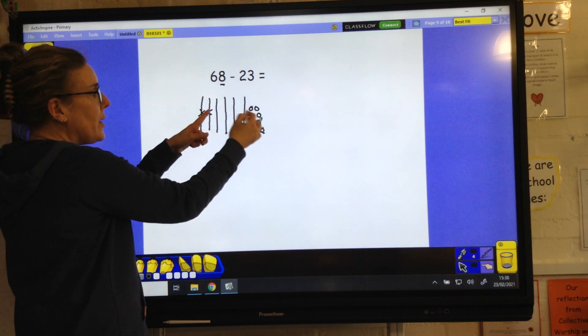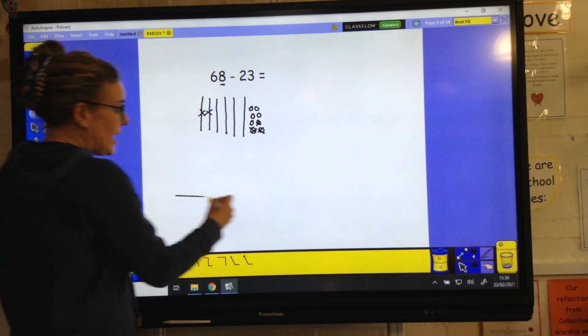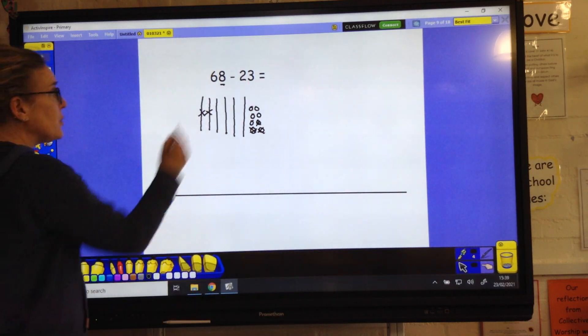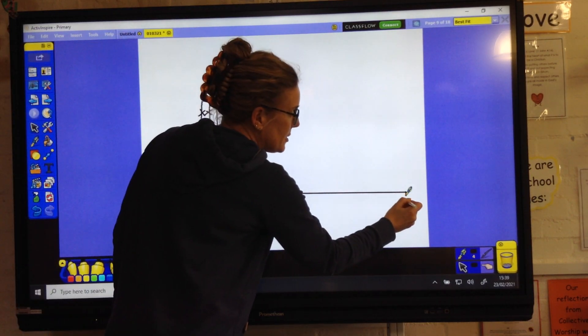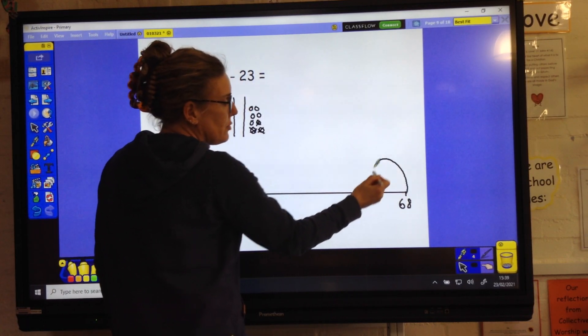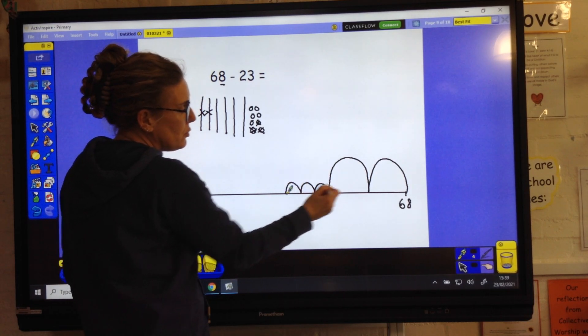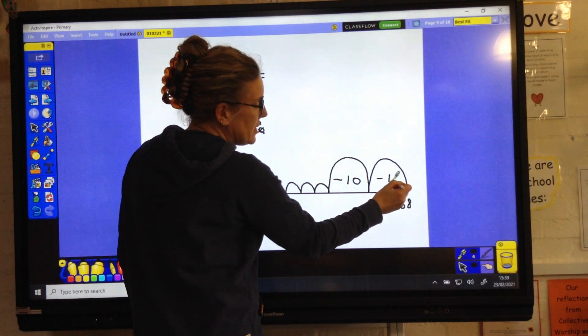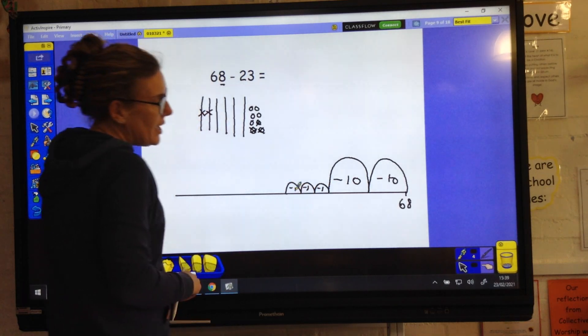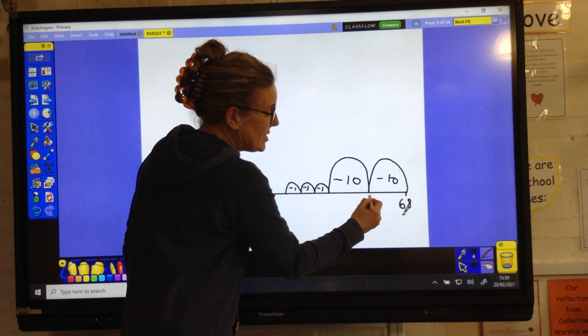What we're left with is our answer. We could use a number line to help us work this out. We count backwards. 68 would go over here. We're subtracting 23, 10, 20, 1, 2, 3. Each of these is a jump of 10 and each of these is a jump of 1.